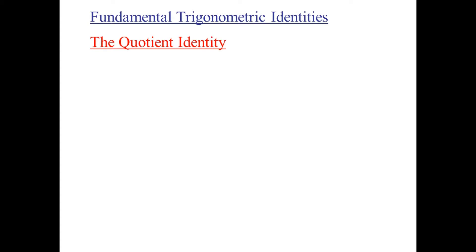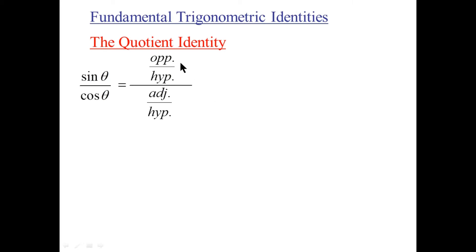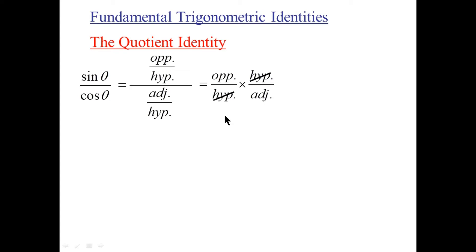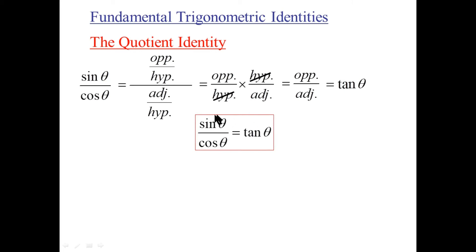The first one we'll look at is called the quotient identity: sine over cosine. Consider sine to be opposite over hypotenuse, and cosine to be adjacent over hypotenuse. We have a fraction over a fraction, which means we invert and multiply — it becomes opposite over hypotenuse times hypotenuse over adjacent. After appropriate canceling, we have opposite over adjacent. By SOH CAH TOA, opposite over adjacent is tangent. So sine over cosine equals tangent, and that's a fundamental trig identity.